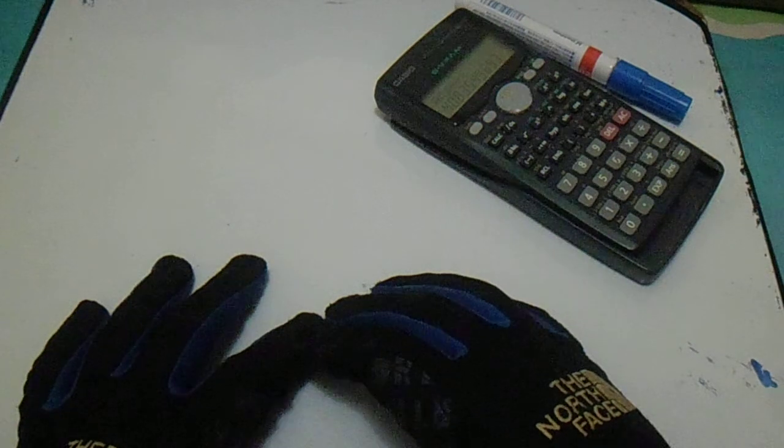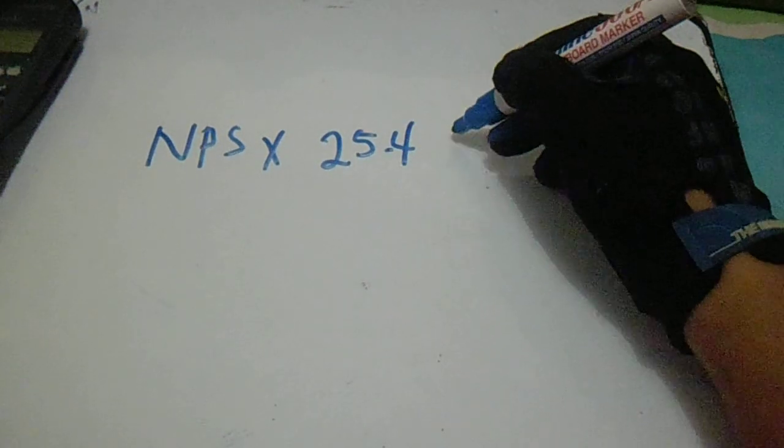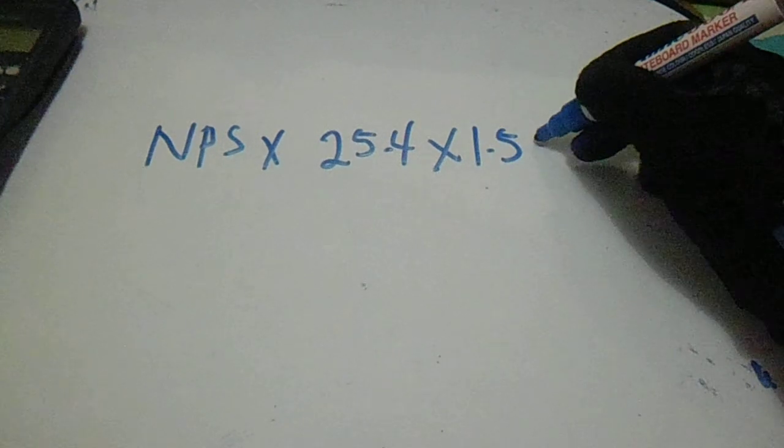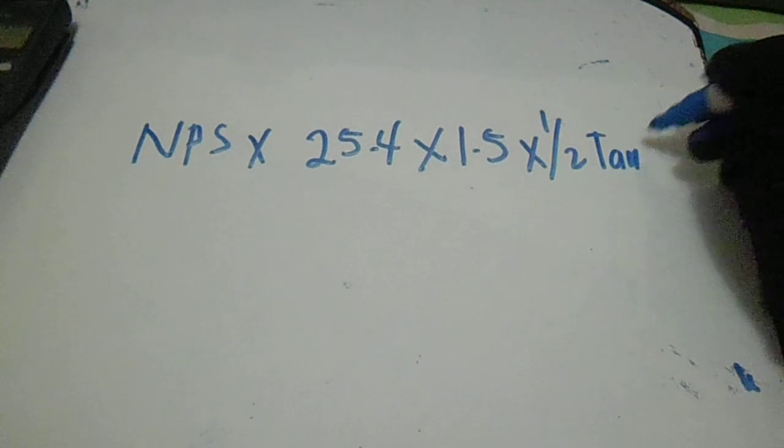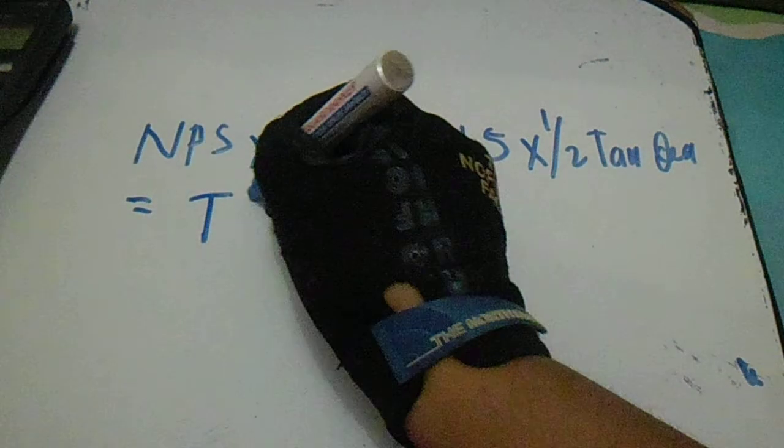This is the formula for the special elbow. The formula is: NPS × 25.4 × 1.5 × (1/2 tan degrees) = take-off.